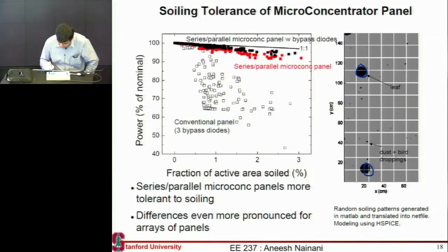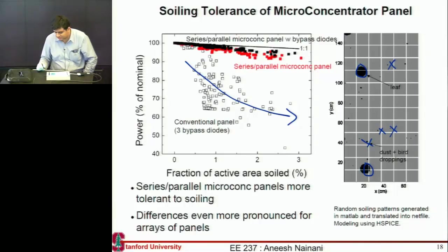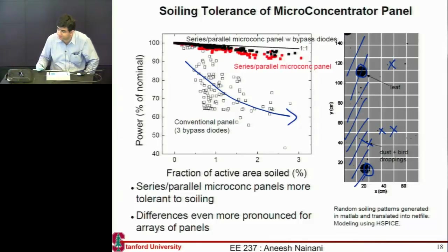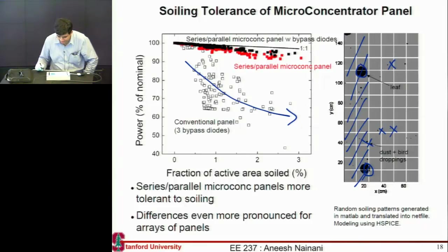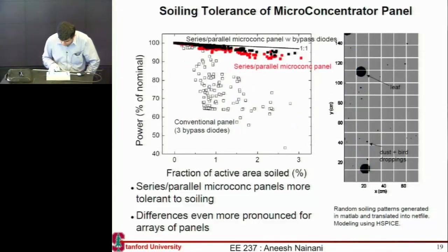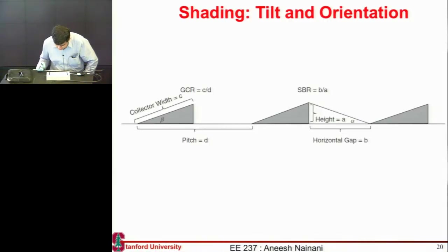In the most realistic case — a few leaves and some bird droppings — efficiency will drop substantially, but not linearly with the shaded area. It depends on where the shading falls. If all the bird droppings and leaves are concentrated on just one part of the panel you can still get higher efficiency, but if they're spread across the whole panel efficiency drops very rapidly. Again, placing more bypass diodes helps alleviate this.